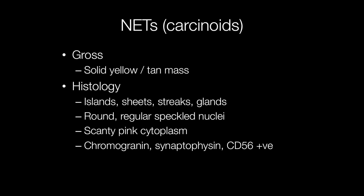Grossly, neuroendocrine tumours or carcinoids have a solid yellow or tan appearance on cut surface. Histologically, the tumour cells are composed of island sheets, streaks, and glands. The nuclei are round with a speckled chromatin pattern and the cytoplasm is rather scanty and pink staining. Useful immunostains include chromogranin, synaptophysin, and CD56.